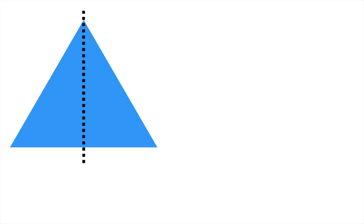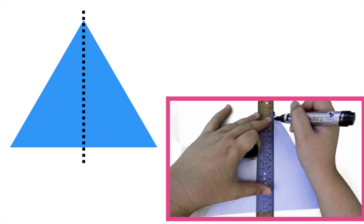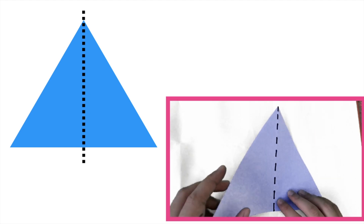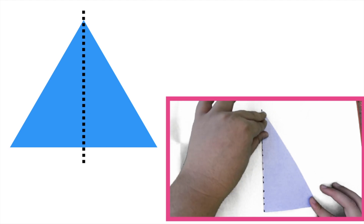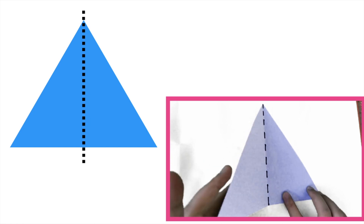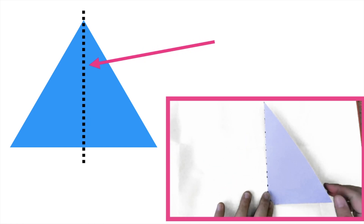How about if we have this? What if I draw the dotted line at the middle of this triangle? Is it a line of symmetry? Let's find out. First, we need to draw the line at the middle. And then, let's try to fold it. Do we have two equal parts when you fold it? Look at the picture. Do we have two equal parts? Very good. Since we have two equal parts when we fold this using the dotted line, therefore, it is a line of symmetry.